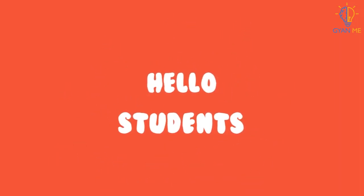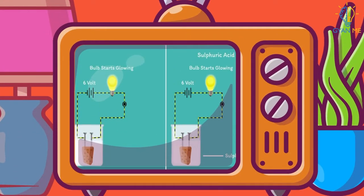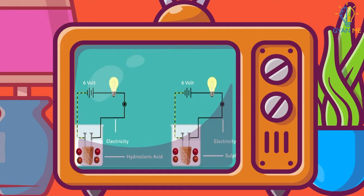Students, we have seen in our previous video that both acids and bases are electrolytes in their aqueous solution. You know for any solution to be able to conduct electricity, the solution should form ions.